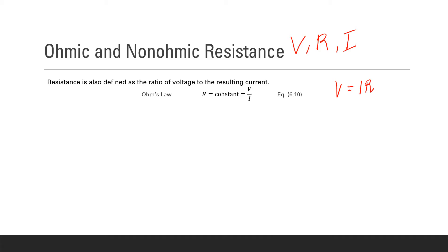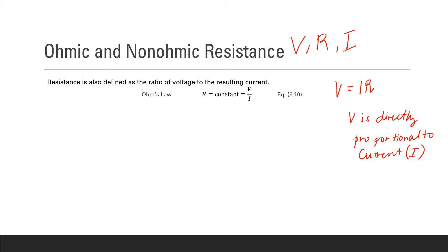This equation tells us that voltage is directly proportional to current. Remember that current is the flow of charges in a conductor or in a circuit. Therefore, it suggests that the greater the voltage of a source, the greater or the faster is the flow of charges in a circuit.